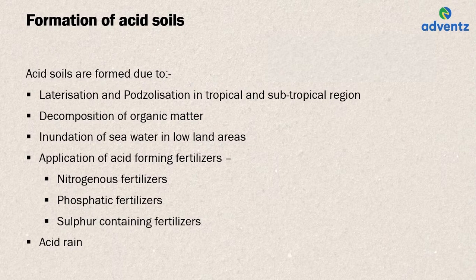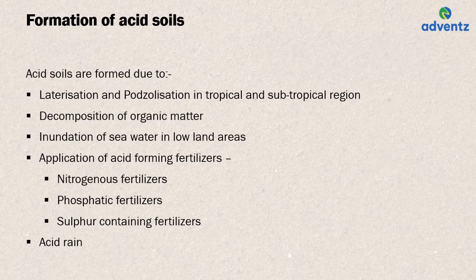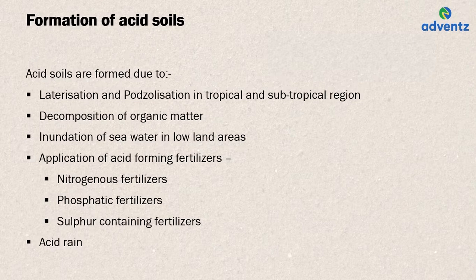Let us understand the process of formation of acid soils. Acid soils are formed due to soil-forming processes like laterization and podzolization in tropical and subtropical regions. Due to heavy rainfall, base-forming ions like calcium and magnesium are leached down from the soil, leaving more acid cations like aluminium and iron.